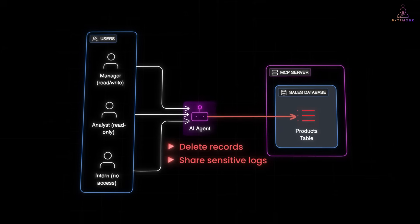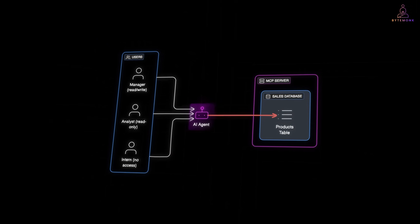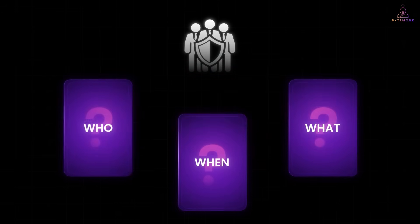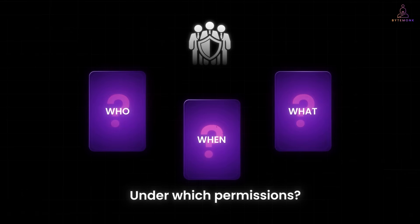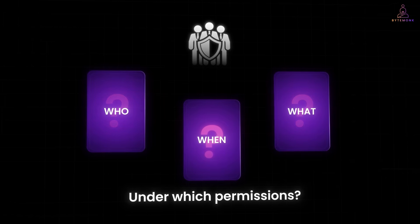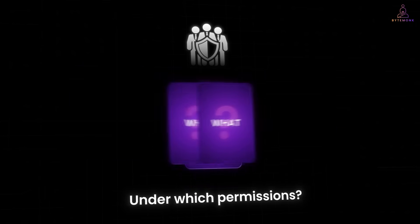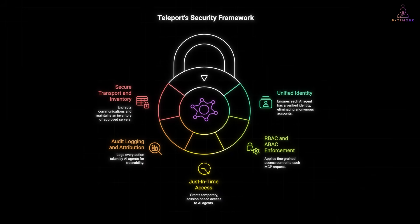Even if you trust your AI, you still need to prove what it did. Regulators and security teams need to know who accessed what, when, and under which permissions. MCP doesn't provide an audit trail by default. If an AI deleted rows from your database or leaked sensitive files, you may never know who or what triggered it. So the question is, how do we secure MCP without losing its benefits? And that's where identity-first security, and specifically Teleport Secure MCP, come in.